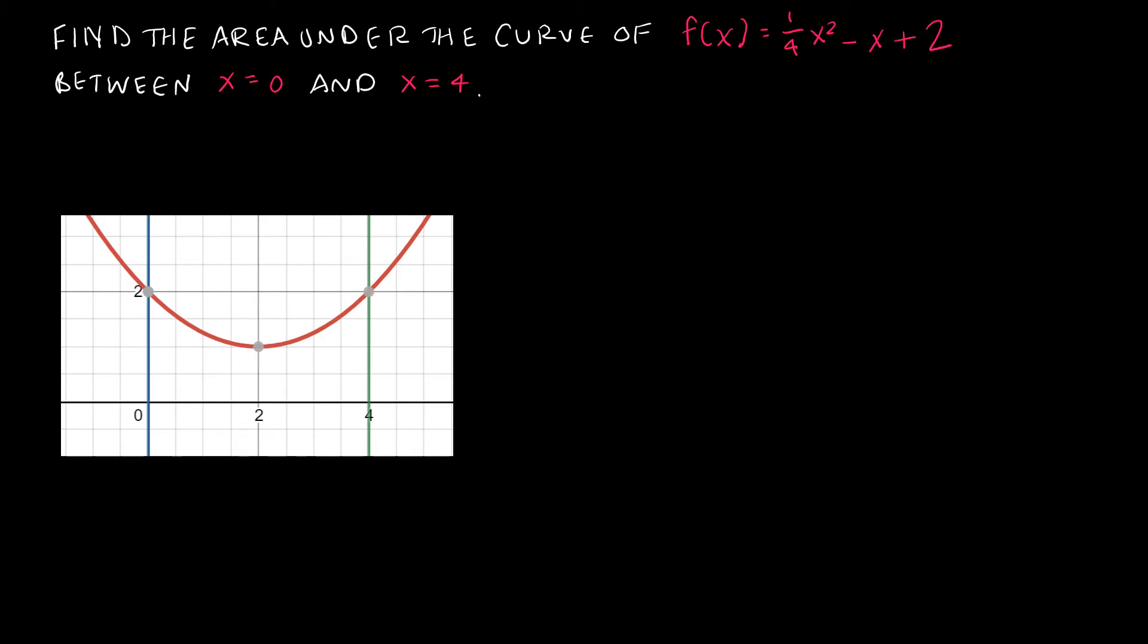So again if I were to fill in this space, and I encourage you to do that, this is the area that we're talking about between 0 and 4 underneath the curve stopping at the x-axis. So just as we did last time to find the area, I'm going to integrate from 0 to 4 because those are the given limits of integration. I have ¼x² - x + 2 with respect to x.